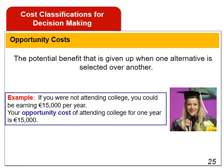Opportunity cost is the potential benefit that is given up when one alternative is selected over another. For example, if you were not attending college, you could be earning 15,000 per year. Your opportunity cost of attending college for one year is therefore 15,000.